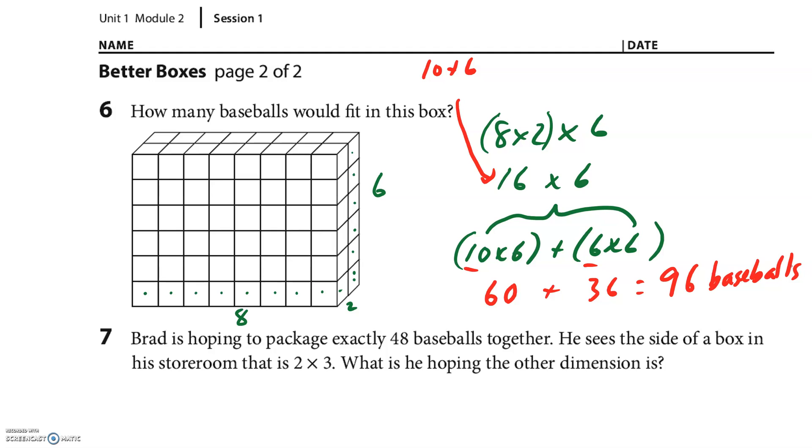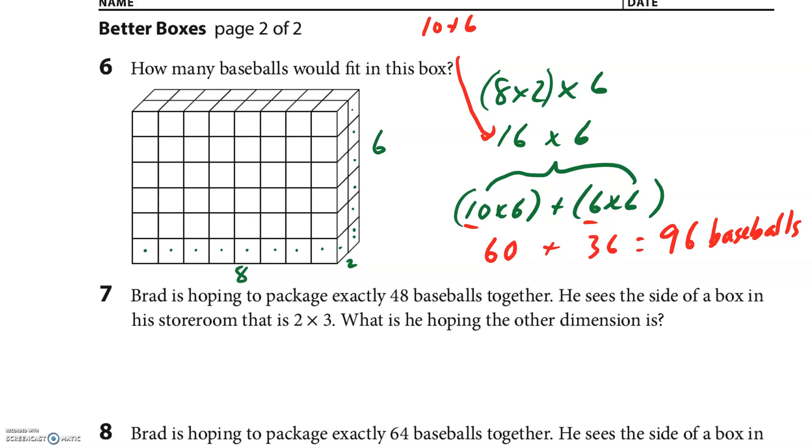I like this next problem quite a lot. Brad is hoping to package exactly 48 baseballs together. He sees the side of a box in his storeroom that is 2 by 3. What is he hoping the other dimension is? We've been multiplying three numbers together: length, width, and height. They're giving us two. We need 48 baseballs, so 2 times 3 times something equals 48. This is 6, so 6 times something equals 48. It's not 10, that'd be 60. 6 times 8 happens to be 48, so the other dimension he's hoping is 8.